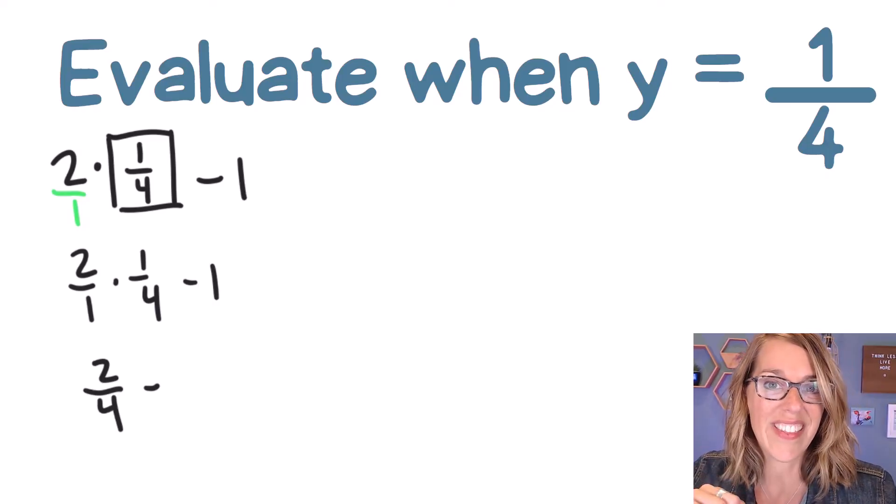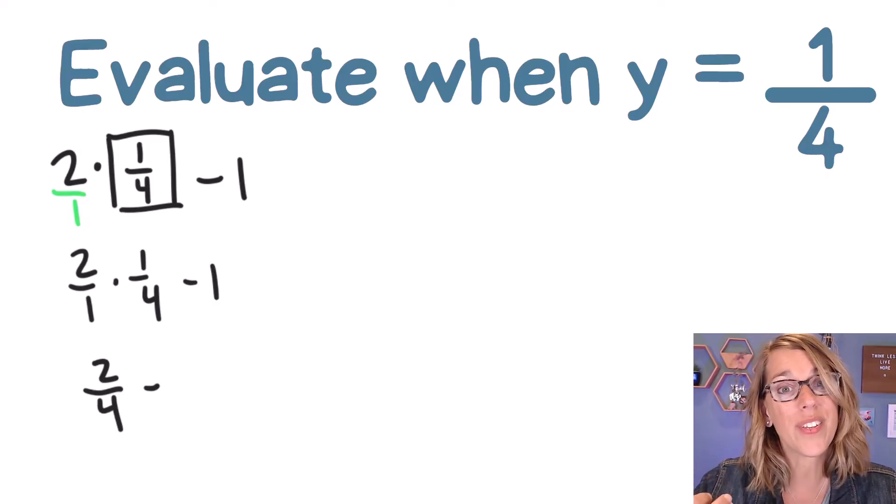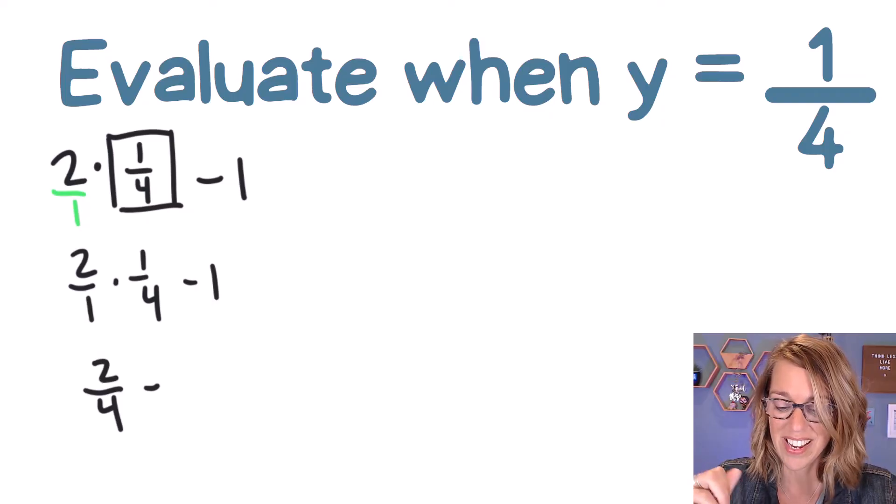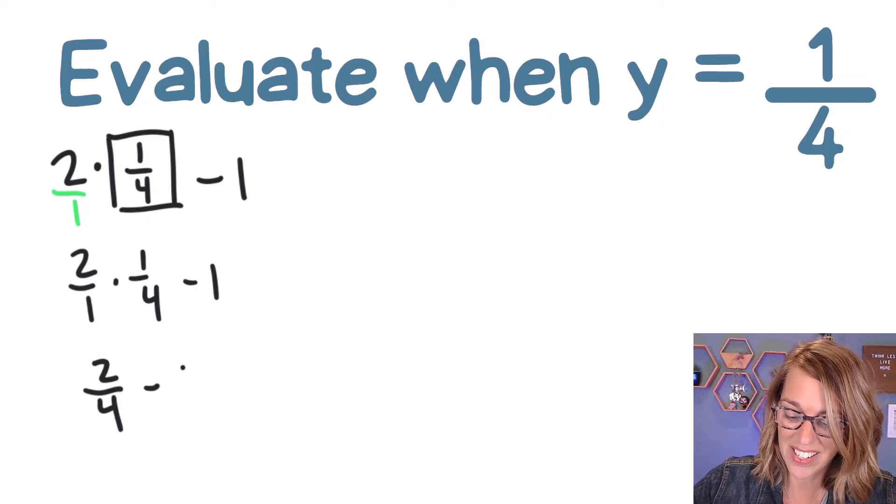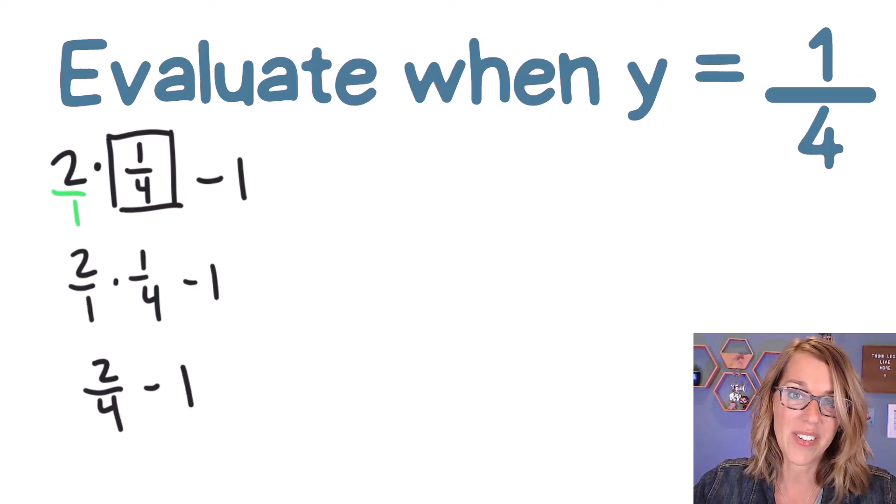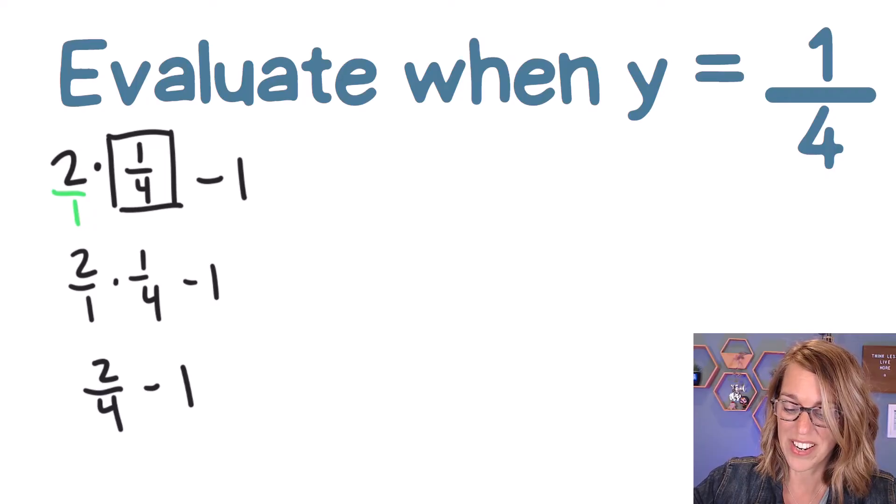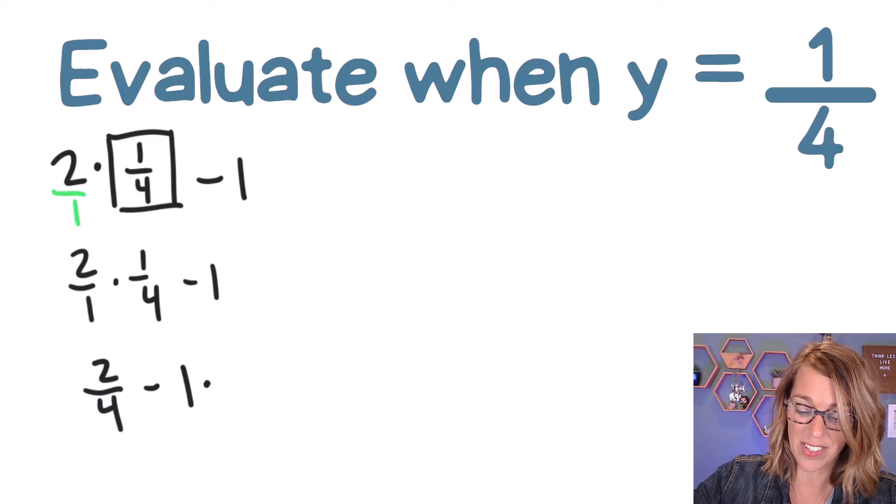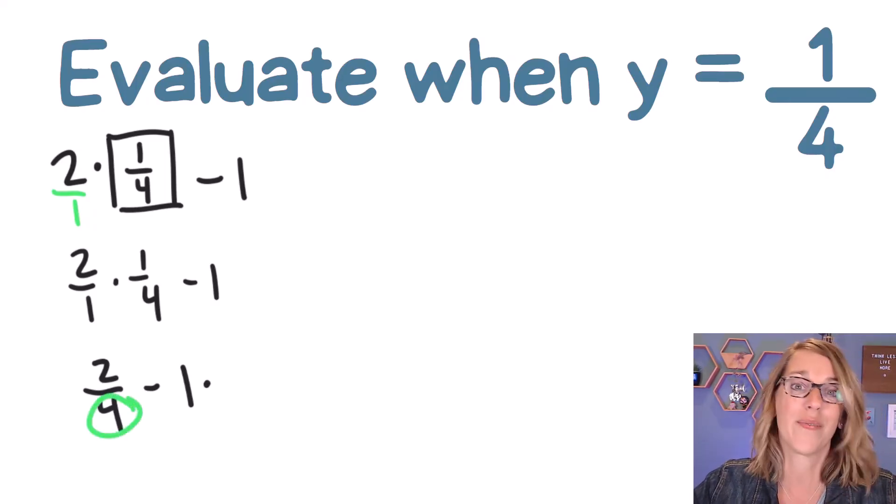You can simplify at this point if you want, or you can go ahead and combine your 2/4 and your minus 1. I'm going to go ahead and use a common denominator here, and that common denominator is actually the only denominator that I have, which is a 4.